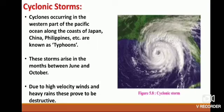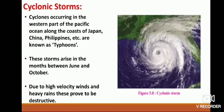The cyclones in the Caribbean Sea are known as hurricanes and they are very destructive, causing a lot of loss of life and property. During these storms, the minimum velocity of the wind is 60 km per hour. Cyclones that originate in the temperate zone are not so powerful and hence not destructive.